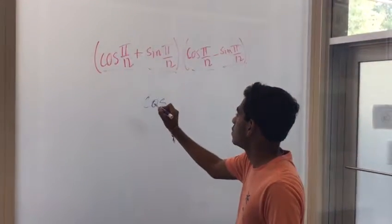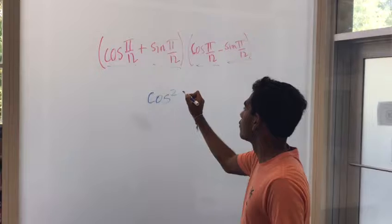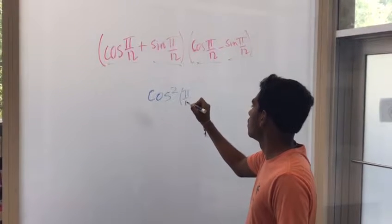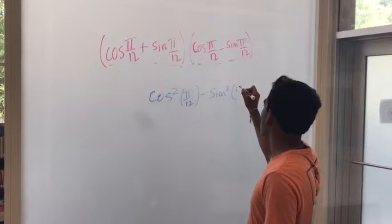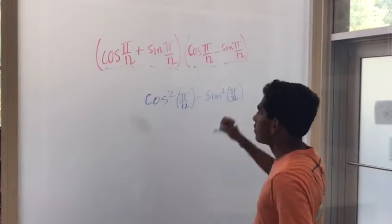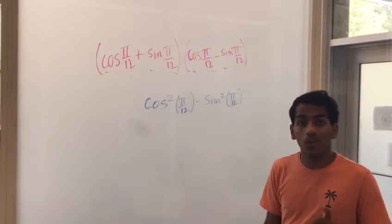That gives you cos²(π/12) - sin²(π/12). Doesn't that look familiar? It will soon.